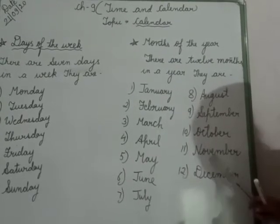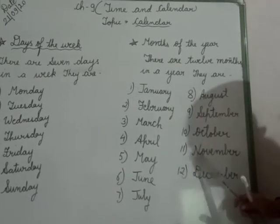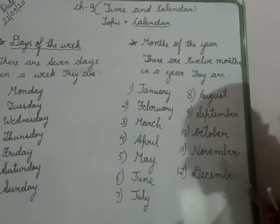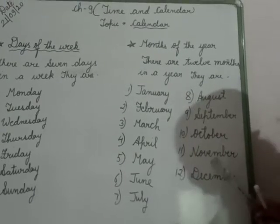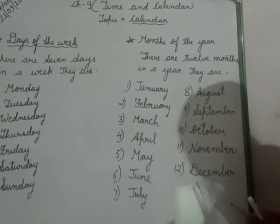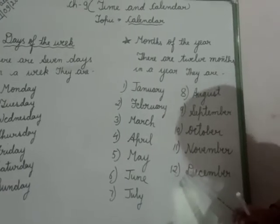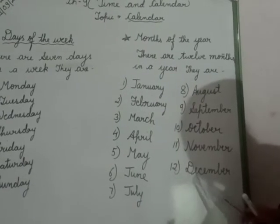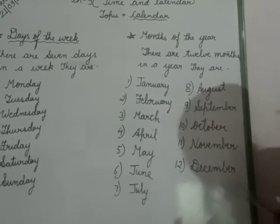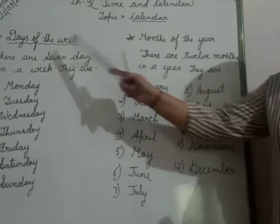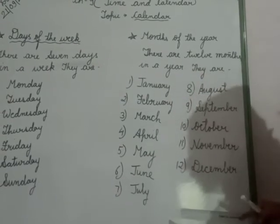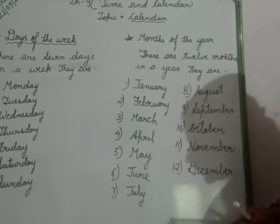Eleventh month, November, N-O-V-E-M-B-E-R. November. Twelfth month, December, which is the last month of the year, D-E-C-E-M-B-E-R. December. So children, these are the days of the week and these are the months of the year.